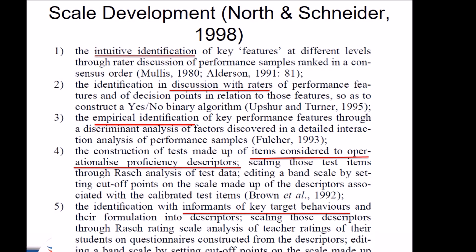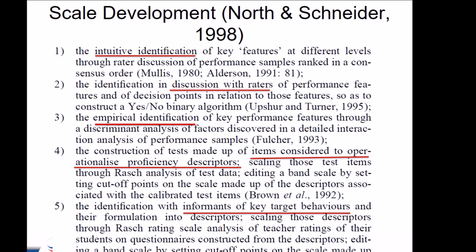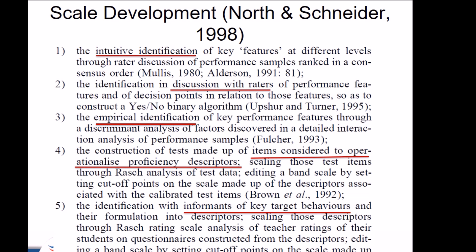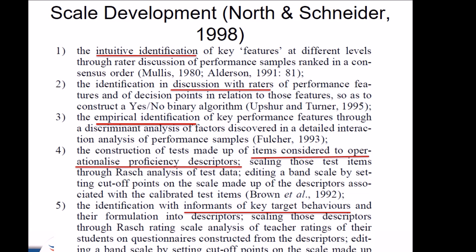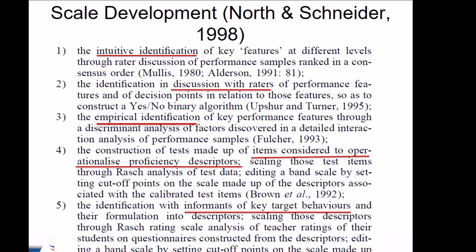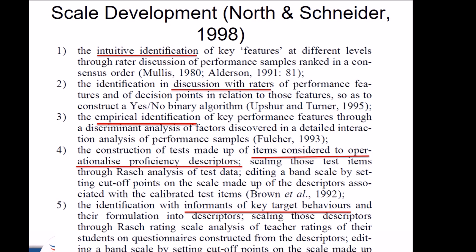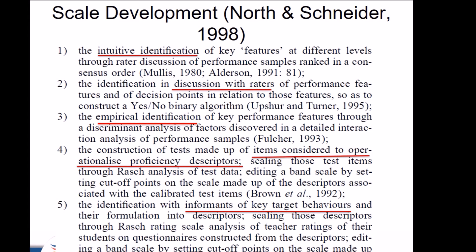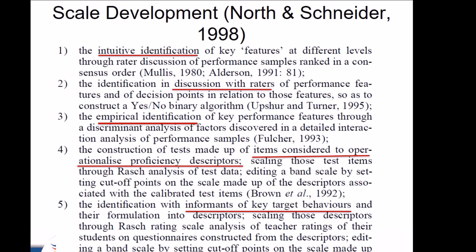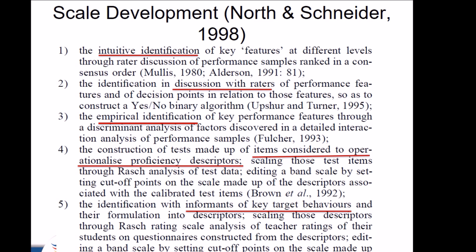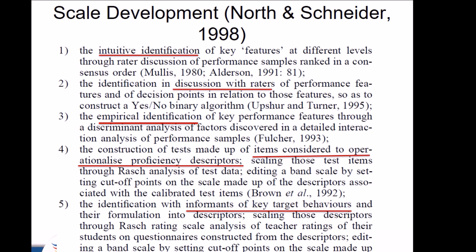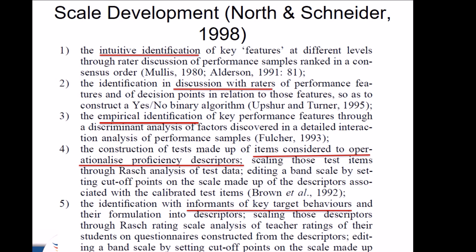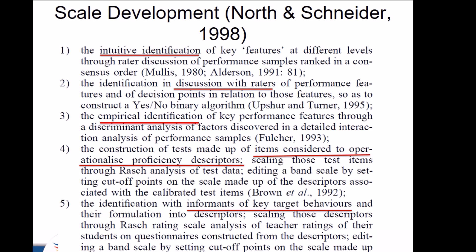Or they just develop a rubric and then ask students to write an essay on a topic, and then use the rubrics they've developed, adopted, or adapted, and they score. I'm going to propose a better way here, which is based on North and Schneider. They propose that you can develop a scale in five stages. I assume at least the first two stages are easy to do in schools. From stage three to stage five you would need some quantitative knowledge, and it becomes a bit labor intensive and time consuming. First, after developing a prompt and getting students to write an essay, the teacher should go through those essays and identify the key features at different levels through rater discussion of performance.